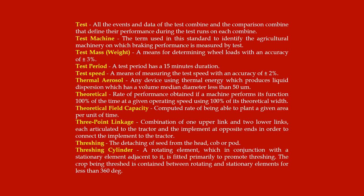Test: all the events and data of the test combine and the comparison combine that define their performance during the test runs on each combine. Test machine: the term used in this standard to identify the agricultural machinery on which braking performance is measured. Test mass: the means for determining wheel loads with an accuracy of ±3%. Test period: a test period has a 15-minute duration. Test speed: the means of measuring the test speed with an accuracy of ±2%.